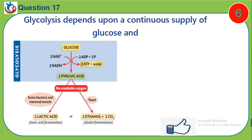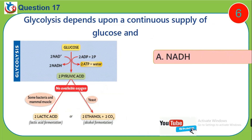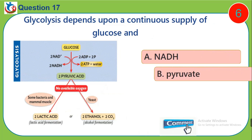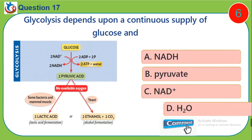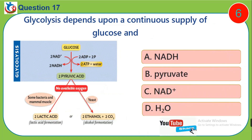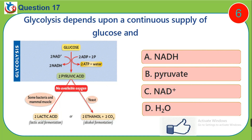Question 17. Glycolysis depends upon a continuous supply of glucose and: A. NADH. B. Pyruvate. C. NAD+. D. H2O.